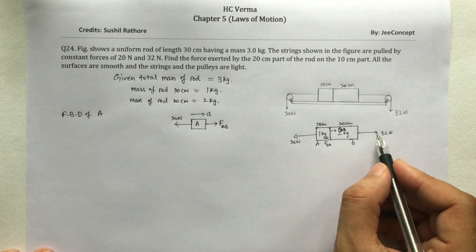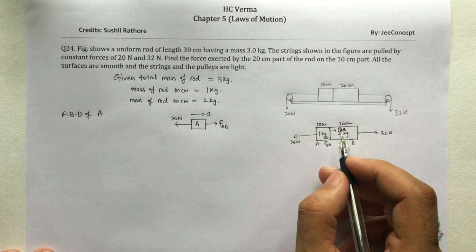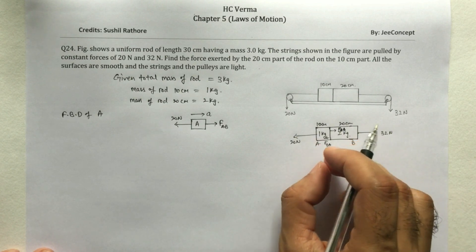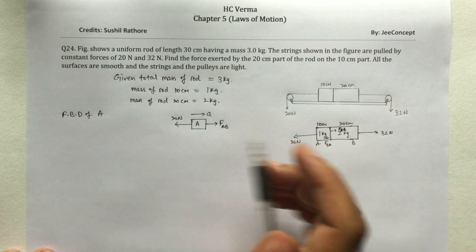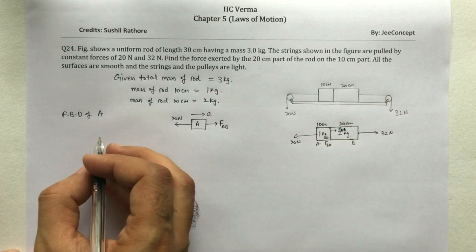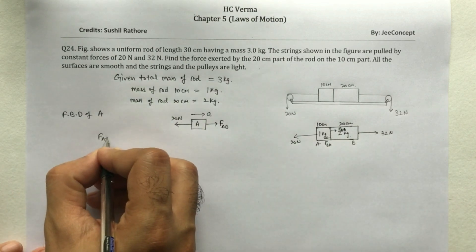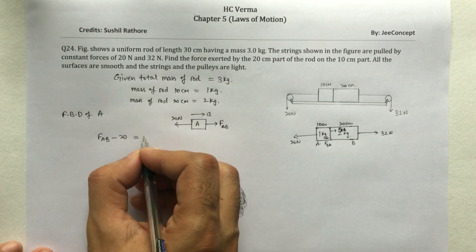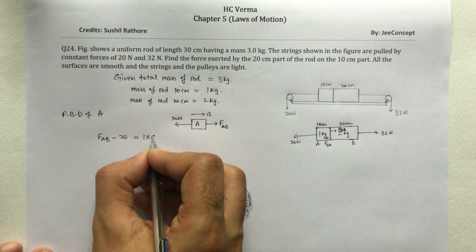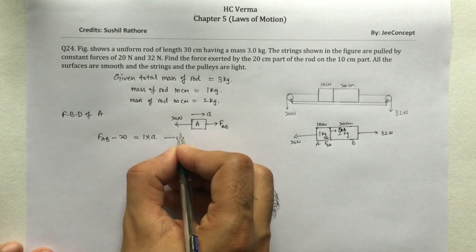Since this 32 N is greater than 20 N, so that means the entire rod will move in the right hand direction with an acceleration A. So I'll write the equation as FAB minus 20 equals mass is 1 into acceleration. So this is equation number 1.